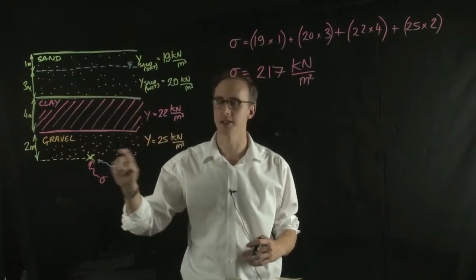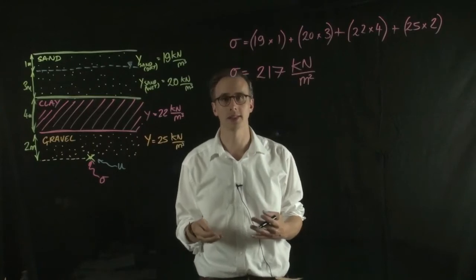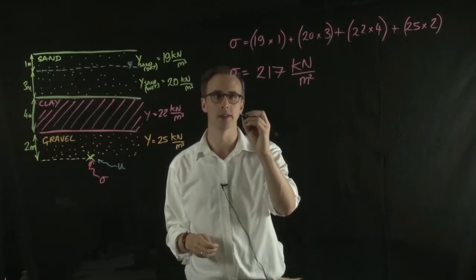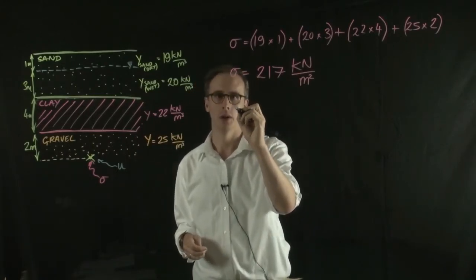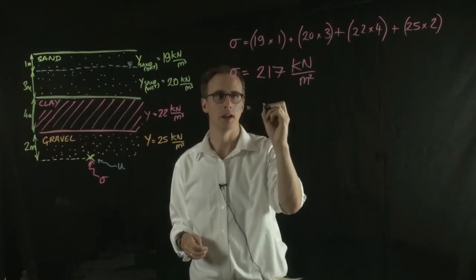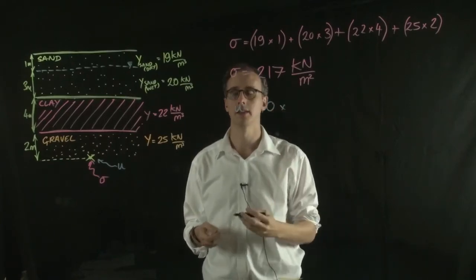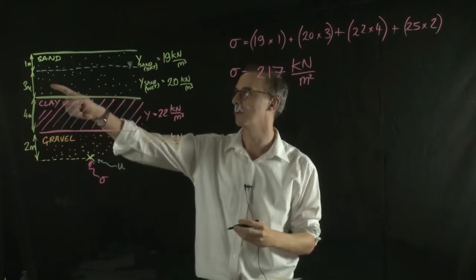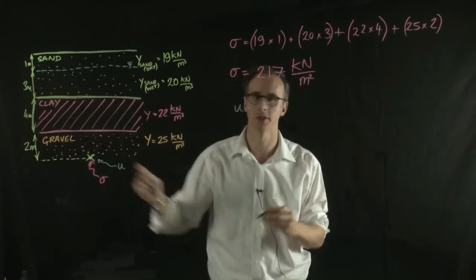Our point of interest is here and we just multiply that depth by the unit weight of water. So our pore water pressure is equal to 10 multiplied by this point's depth below the water table which is 3 plus 4 plus 2.